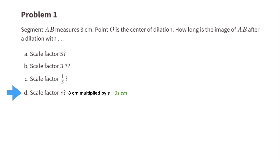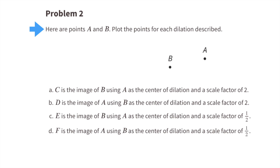Number two: here are points A and B. Plot the points for each dilation described. Part a: C is the image of B using A as the center of dilation and a scale factor of 2. Start with A, head towards B, and since it's a scale factor of 2, move beyond B one entire length. This is where you would plot the point for C.